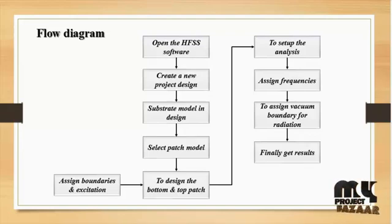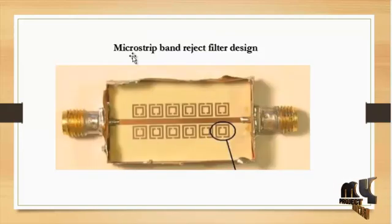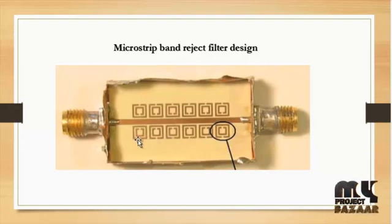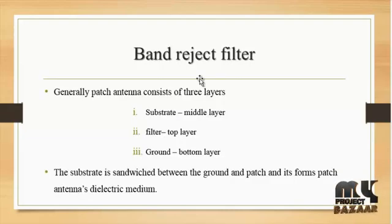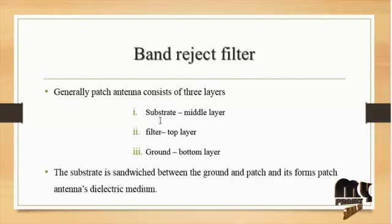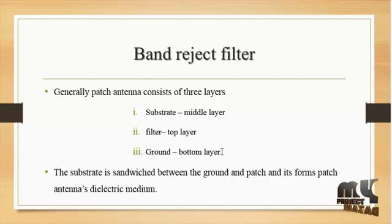Here we are using the split-ring resonator design — this is the microstrip band reject filter design. This is the microstrip line and this is the SRR — the split-ring resonator. We are using 6 resonators arranged in parallel. In a particular band reject filter, the patch generally consists of 3 layers: substrate, filter, and ground. The substrate is in the middle layer, the filter is on top, and the ground is on the bottom. The substrate is sandwiched between the ground and patch, forming a patch antenna dielectric medium.